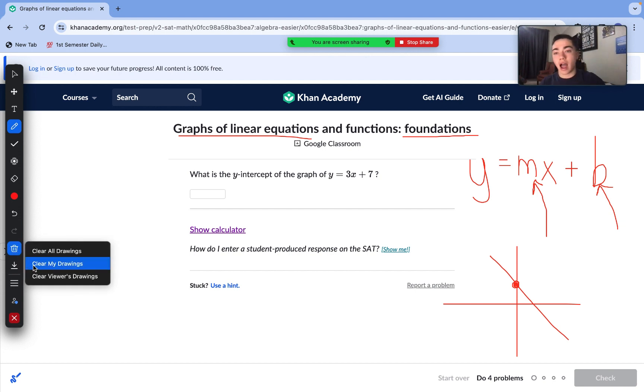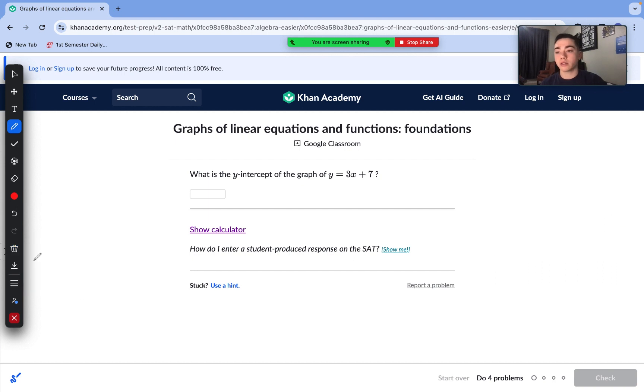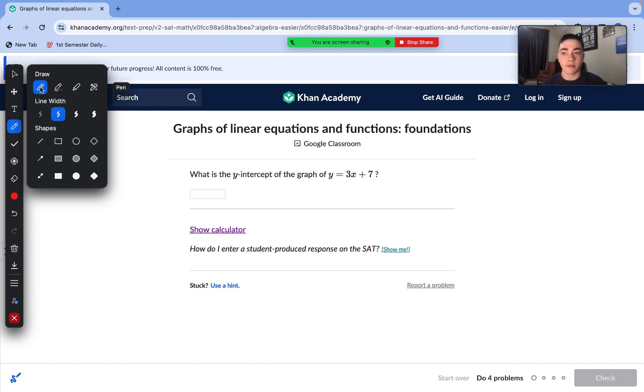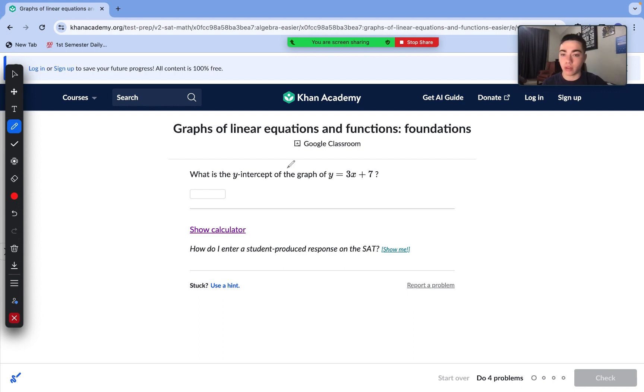If you are kind of confused on the basics of these skills, I would recommend going to Khan Academy Digital SAT Math Practice and going to the lessons before these if you really need some refreshers. But this is all from seventh grade and algebra one. So, hopefully, you guys can get this. Our question, what is the y-intercept of the graph of y equals 3x plus 7?